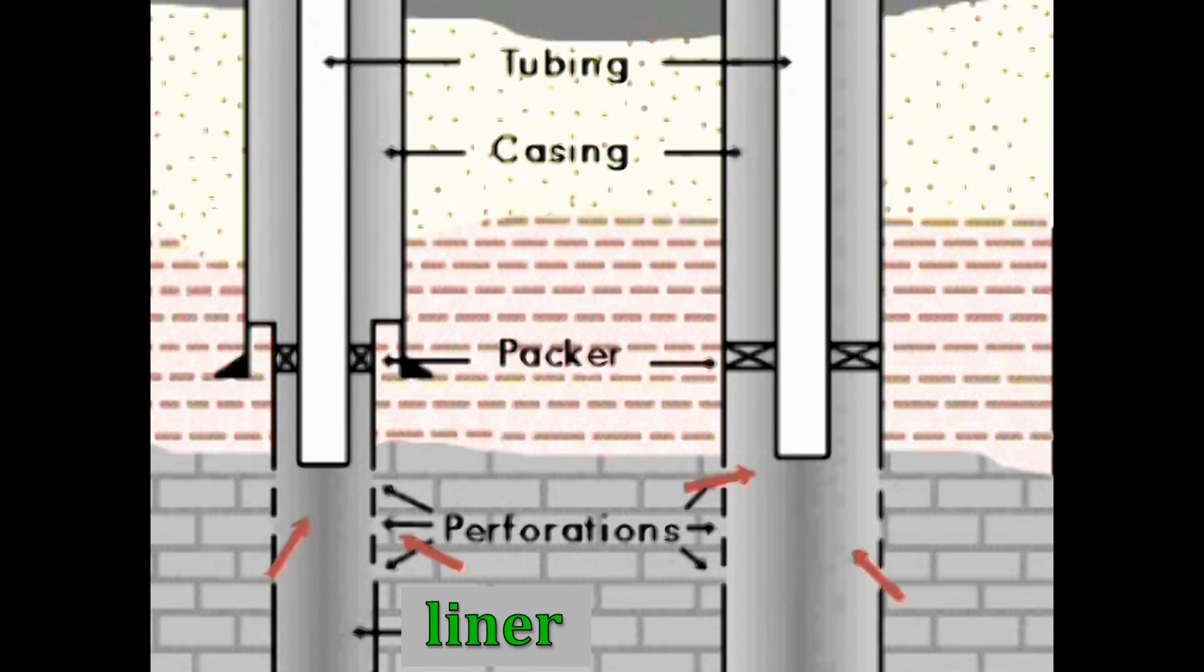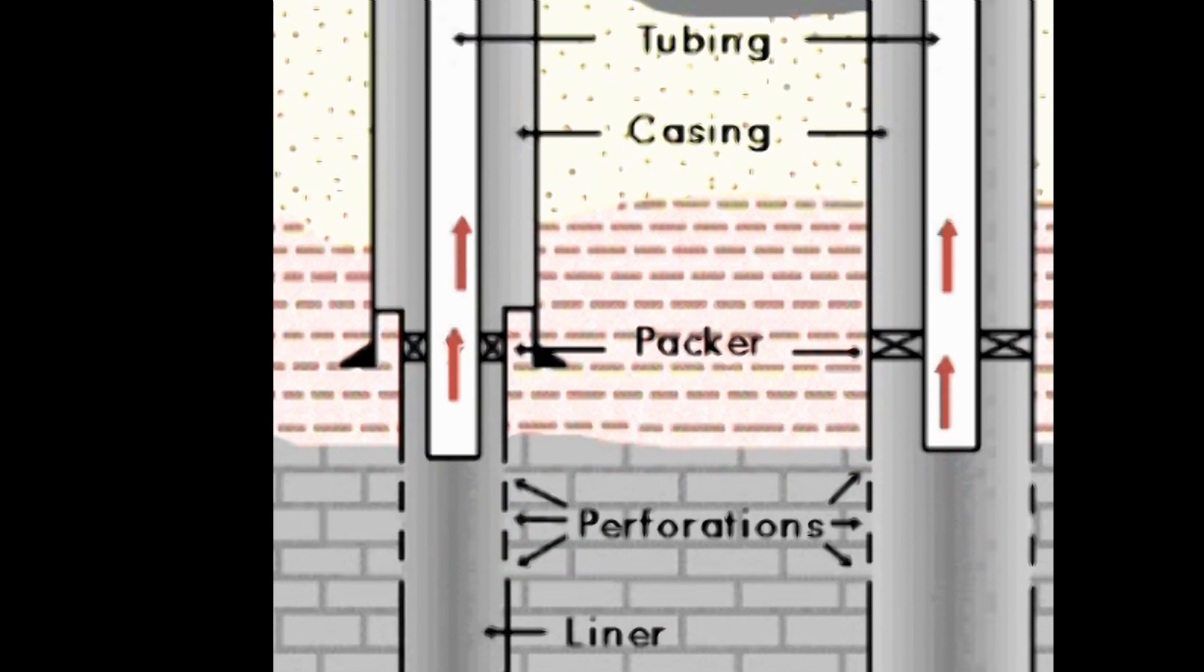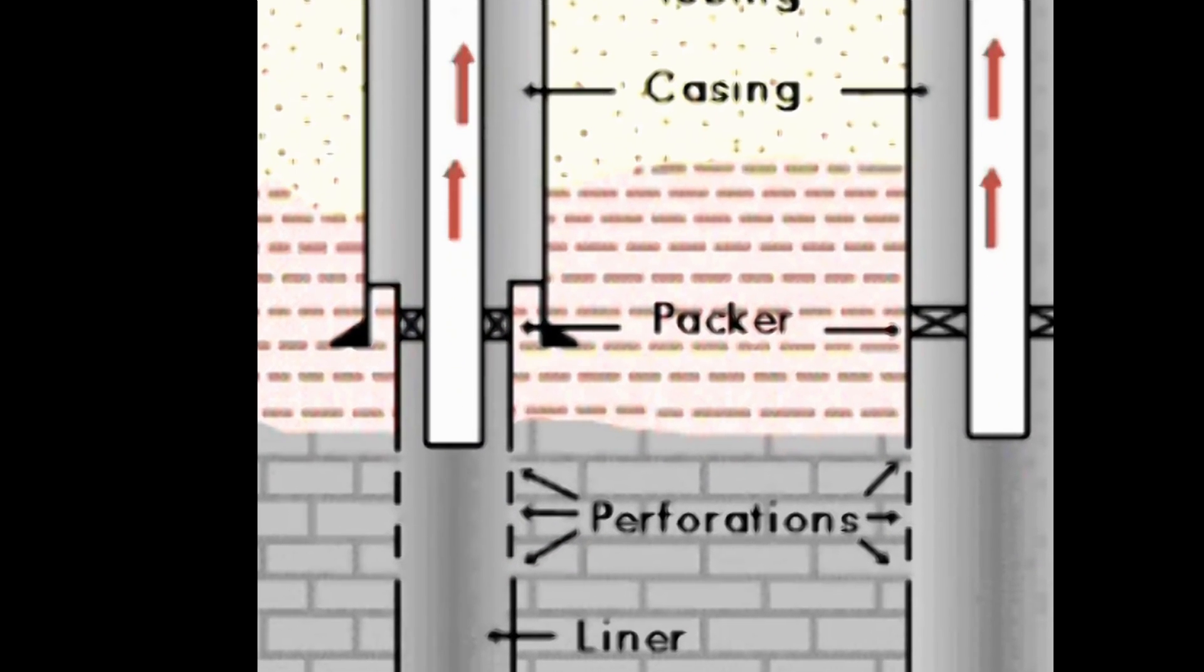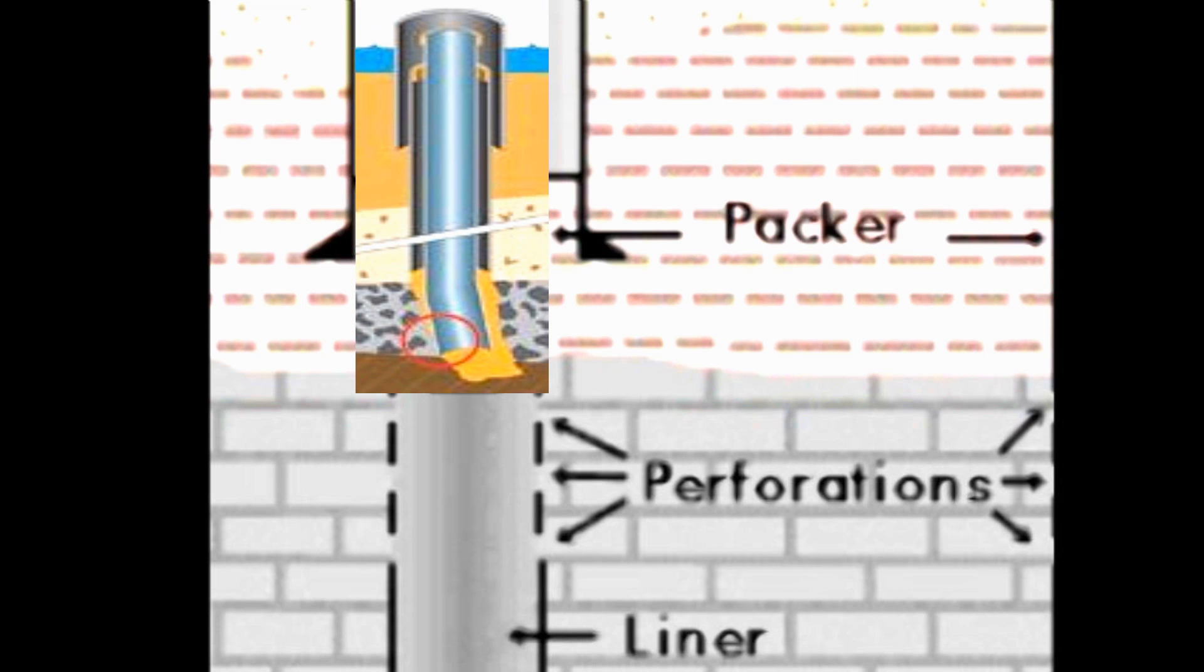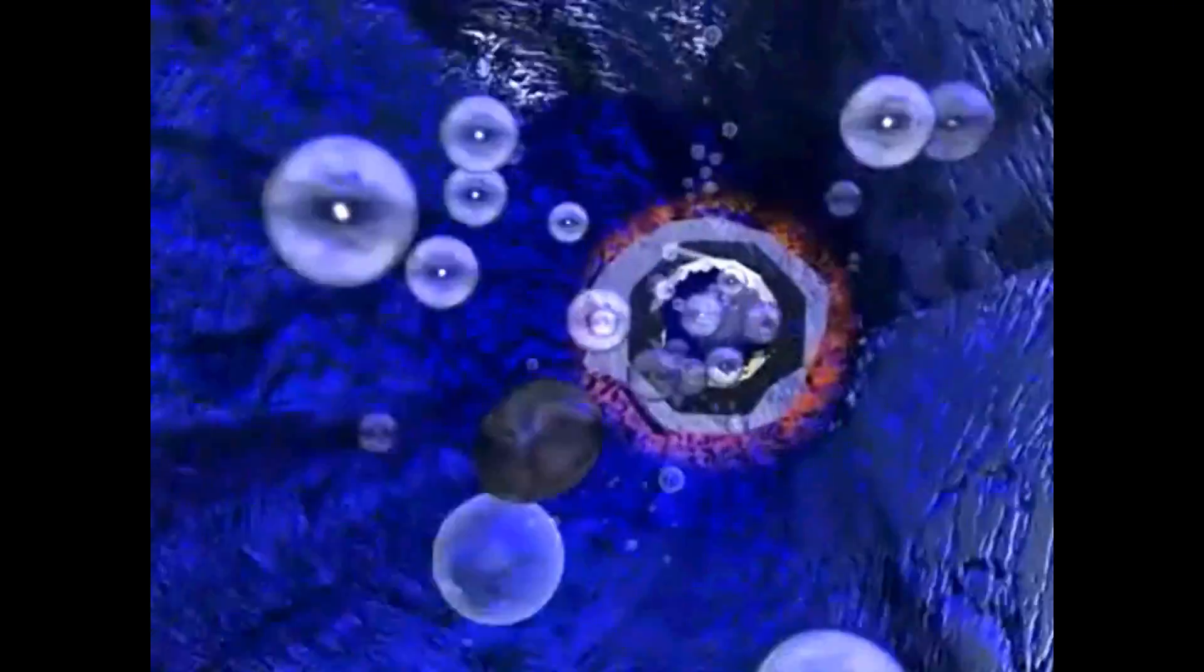In zones that do not perforate well, a liner may be run. Unlike casing strings, liners do not extend all the way to the surface but are hung from the long string as this illustration shows. Liners, although cheaper, may appear more convenient but, in fact, are not preferred because they can cause difficulty in running tools past the restriction of the liner hanger. They also can limit the control of water when production begins. Complete casing strings are preferred if conditions permit.